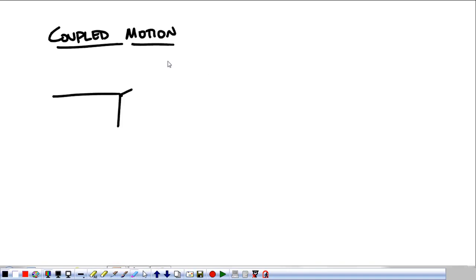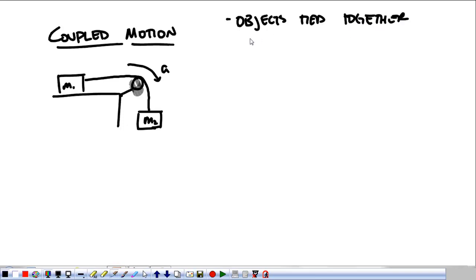Essentially tying two objects together and seeing what happens. For these coupled motion problems, we're going to have a mass, mass one, that's attached by a pulley to mass two. The whole system is going to have the same acceleration. Objects tied together have the same acceleration. If I tie a bike onto my car, the car accelerates at five meters per second squared. Turns out the bike does it as well.